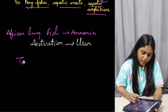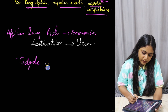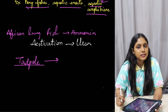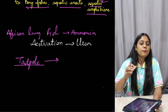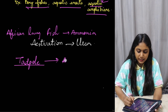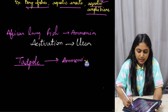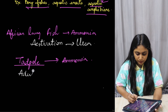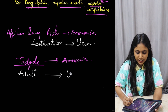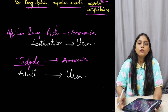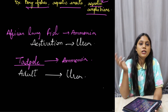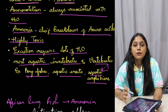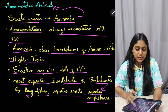Another example is the tadpole larva, which lives in water. Until the tadpole larva is in water, it will excrete ammonia. But once it becomes an adult frog, it starts excreting urea instead. So some animals excrete ammonia for a period of their life and then switch to urea. That was all about ammonotelic animals.